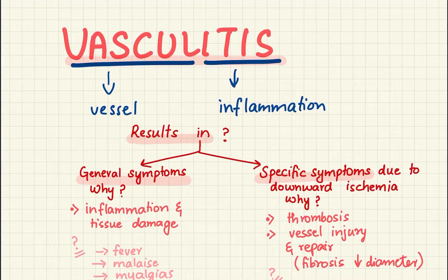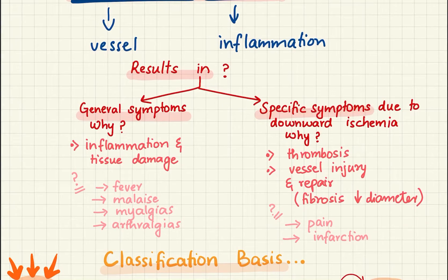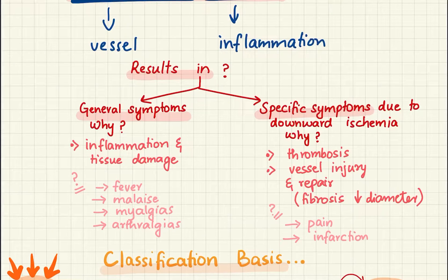This video is a short recap of the whole topic. Vasculitis is vessel wall inflammation. It results in general symptoms due to inflammation and specific symptoms due to downstream ischemia because of thrombosis, vessel injury and repair leading to decreasing diameter of the wall, leading to pain and infarction.